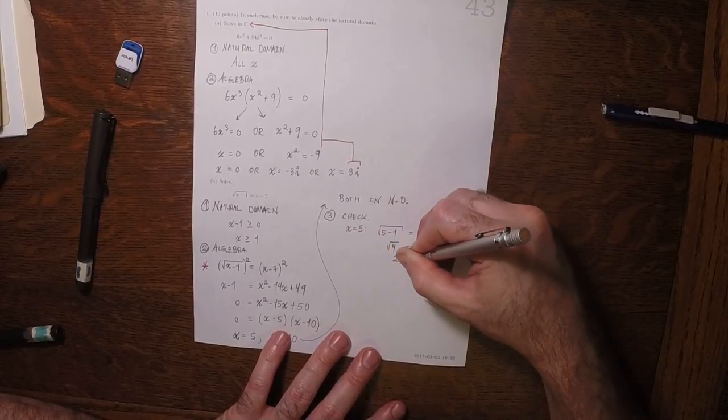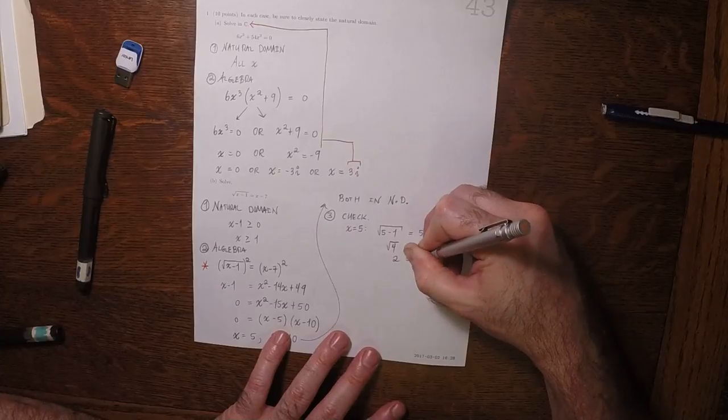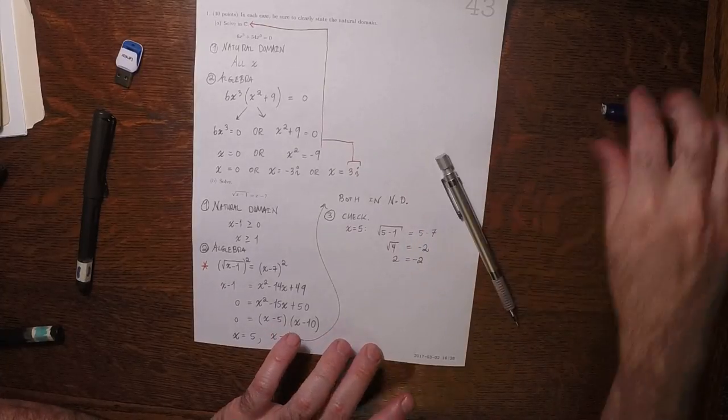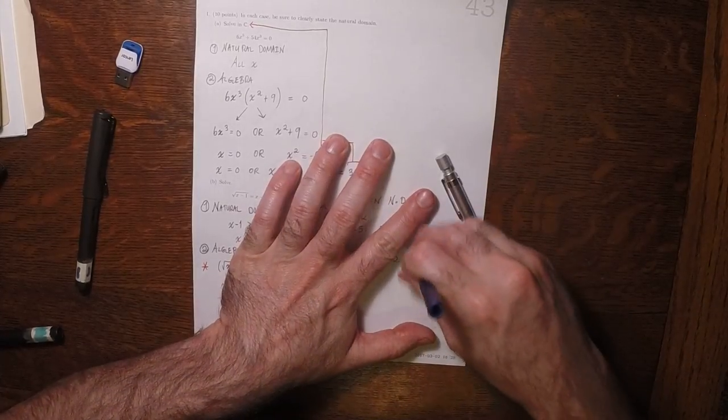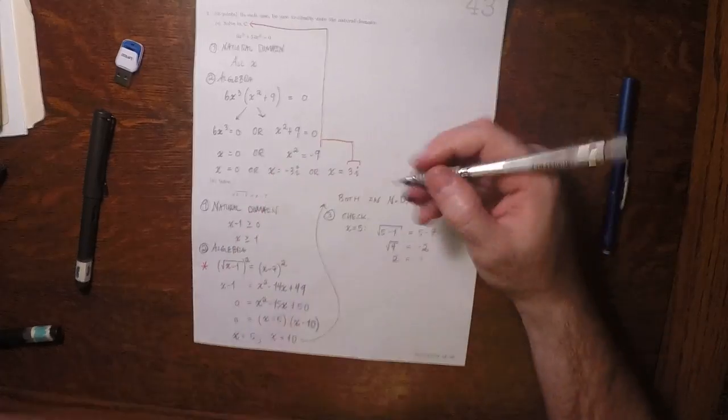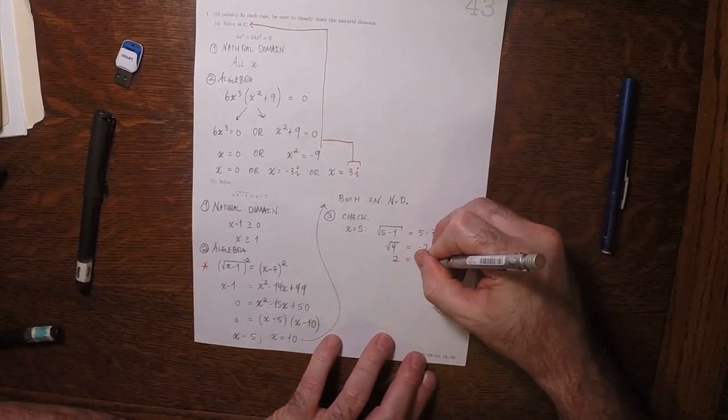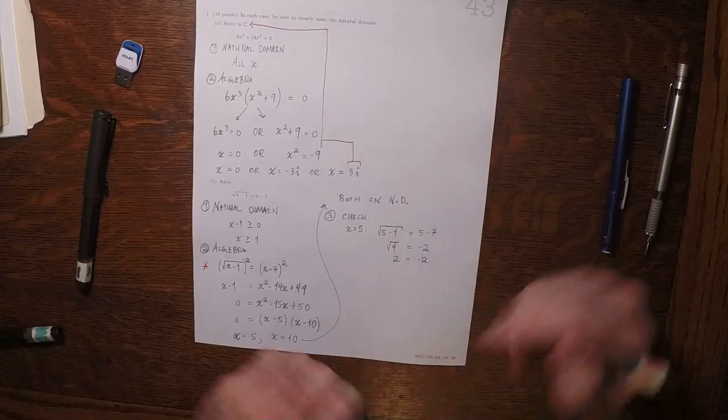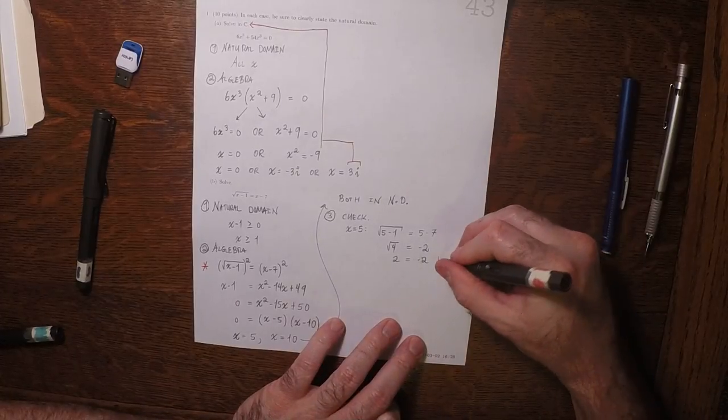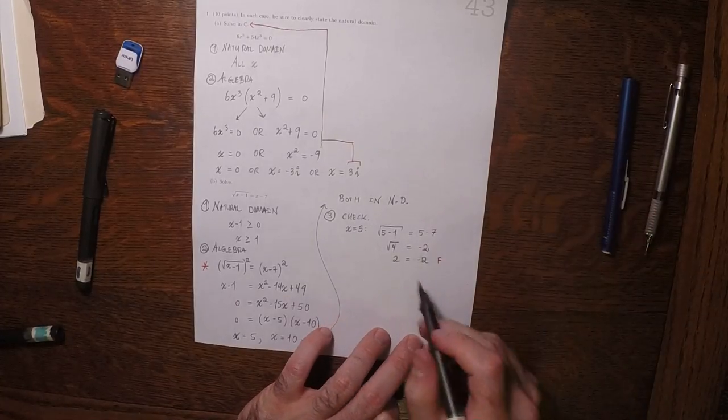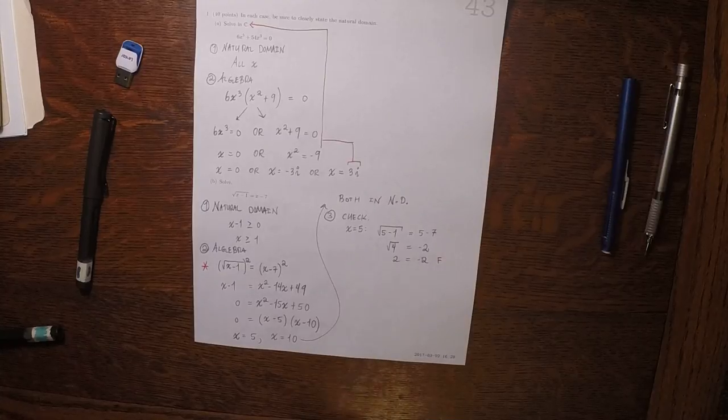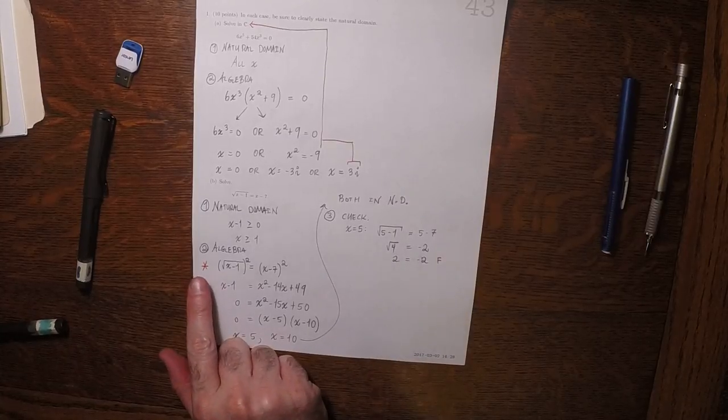So that's 2 equals negative 2. Is this equation true? No, it's false. However, notably, that equation becomes true if you square both sides, which is the danger of having done that.